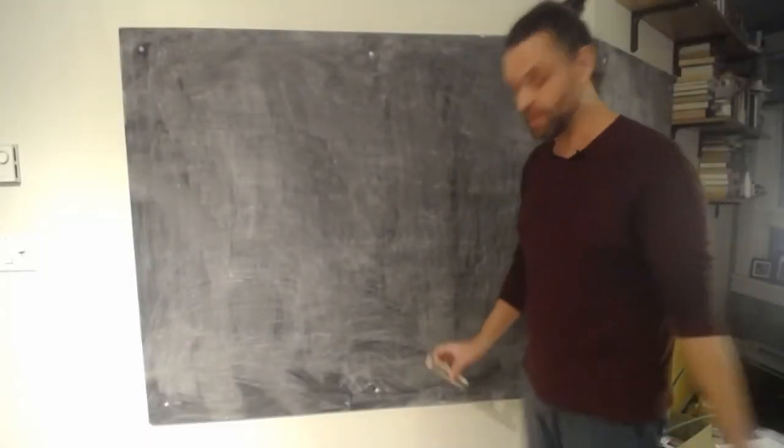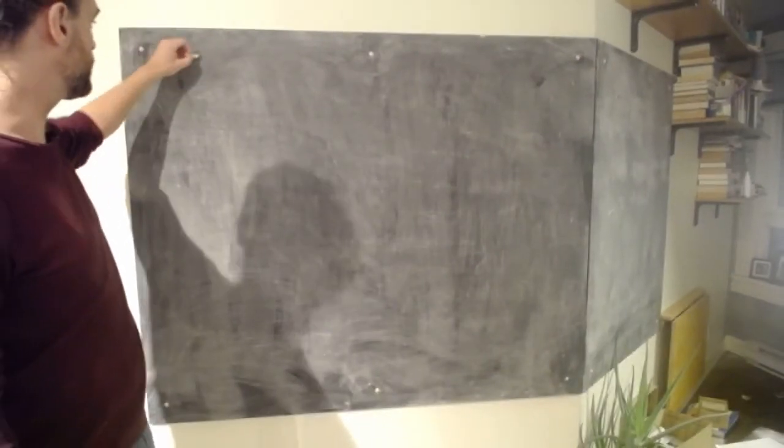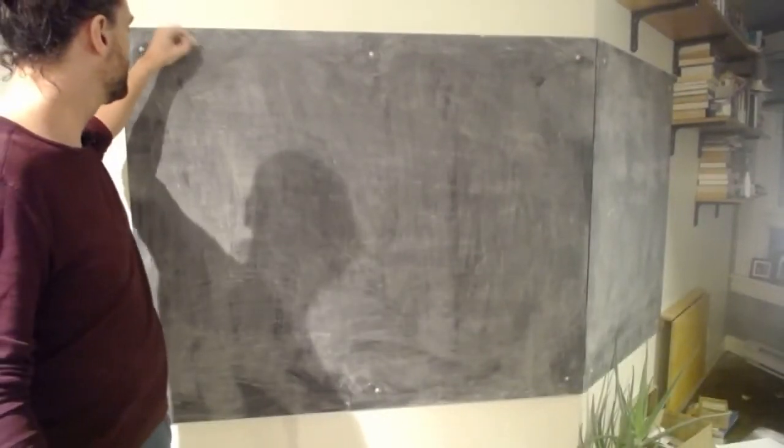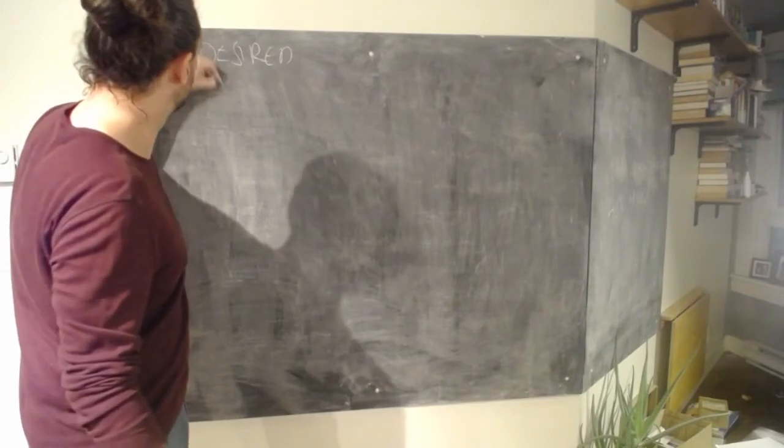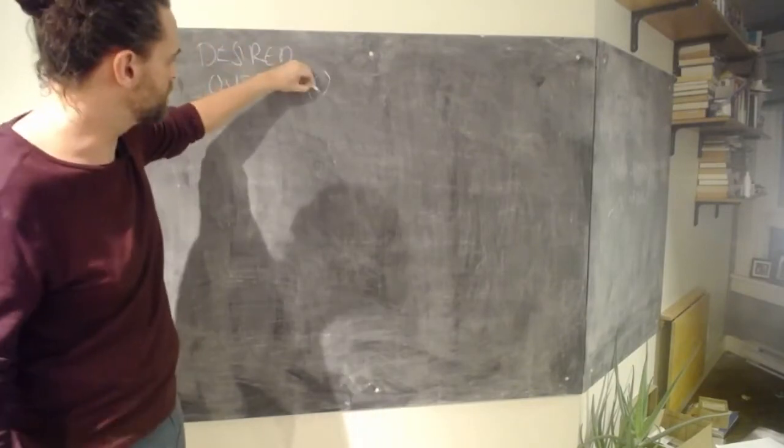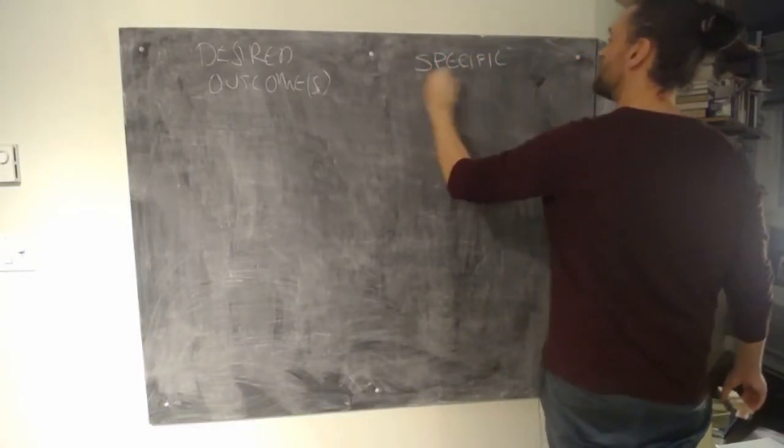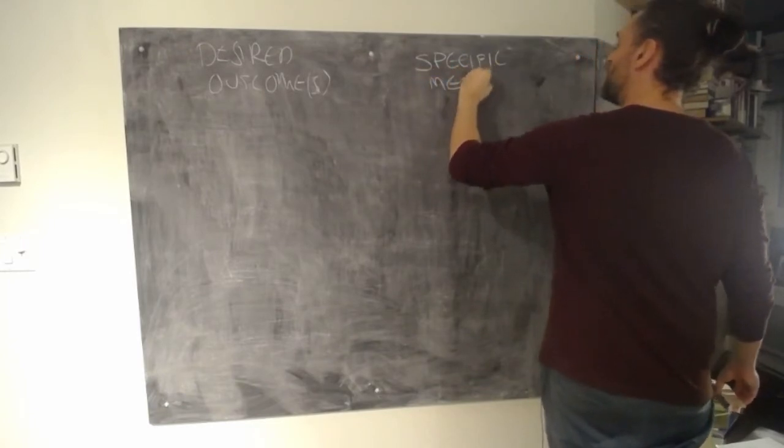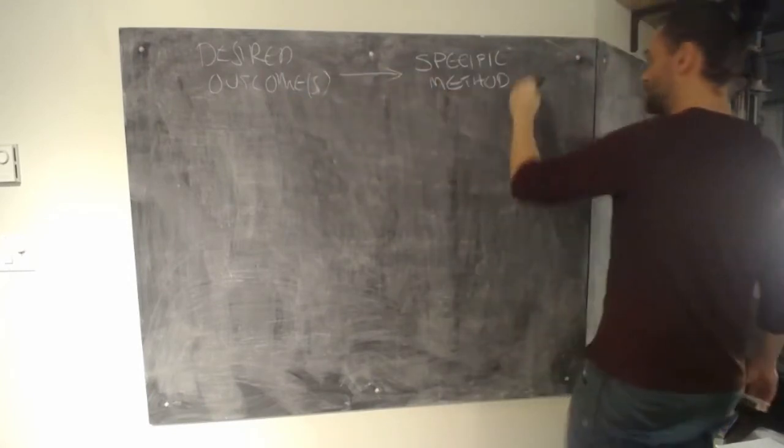So this issue has been bouncing around in my head for a while, so I figured I would start by sharing it. Every project, at least every project I've ever encountered, has like a part of its anatomy that goes like: desired outcomes, and a specific method.